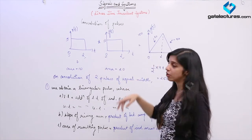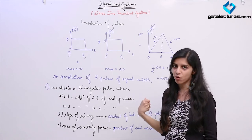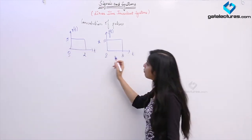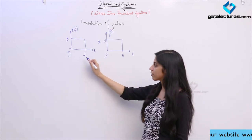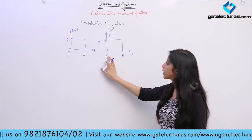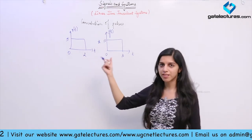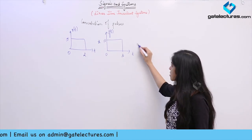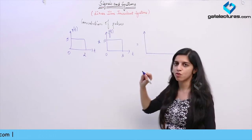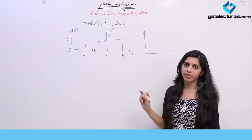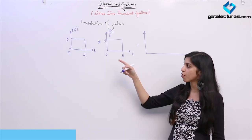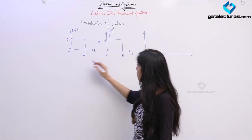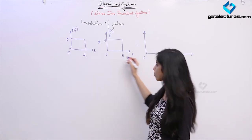Now, if the pulses are not of equal widths — if they are of unequal widths — we are going to obtain a trapezoidal pulse. Suppose we have two pulses of unequal widths: one pulse from t = 0 to t = 2 and another from t = 0 to t = 3. Their widths are not the same. On convolution of these two pulses we obtain a trapezoidal pulse. The lower limit is 0 and the upper limit is the sum of the two upper limits, which is 5.